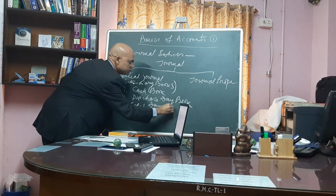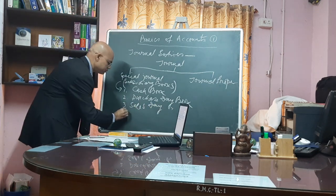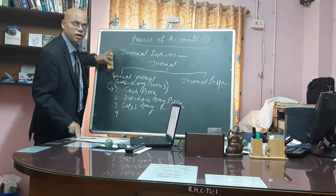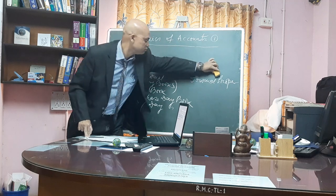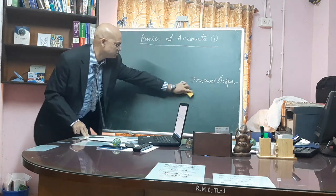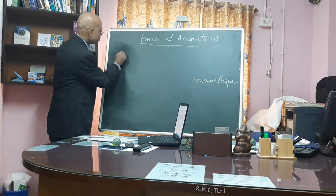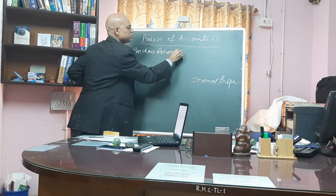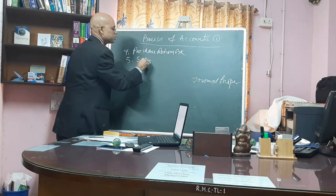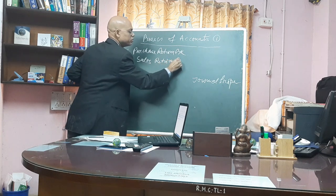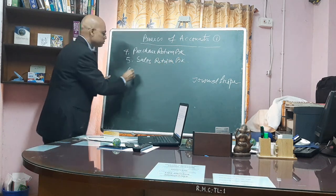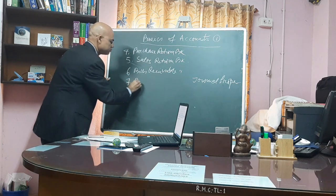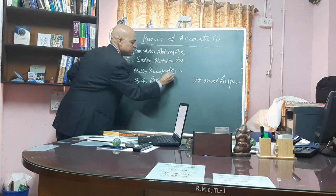Number three, sales day book. Number four, purchase return book. Number five, sales return book. Number six, bills receivable book. Number seven, bills payable book. Purchase return book is also called return outward book.